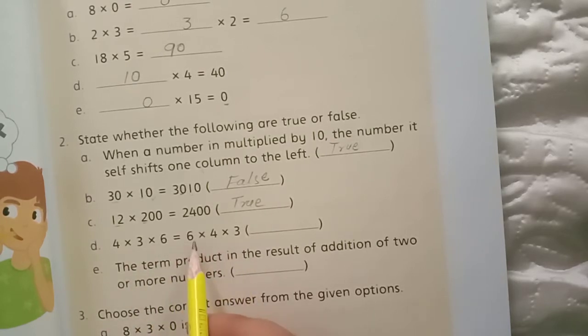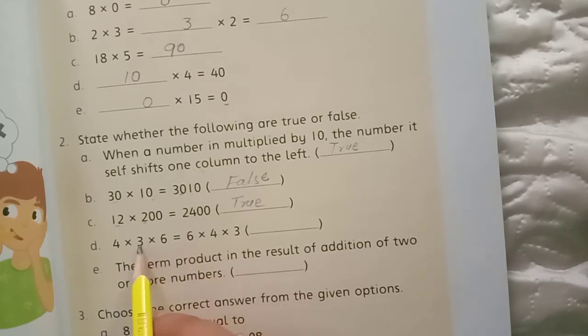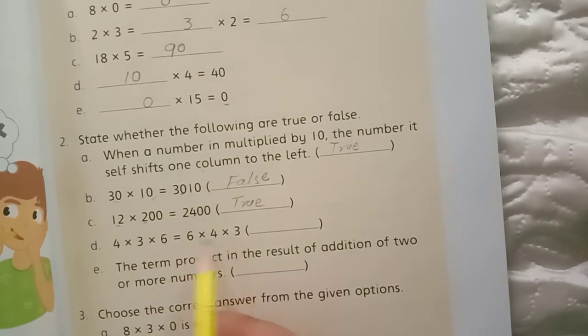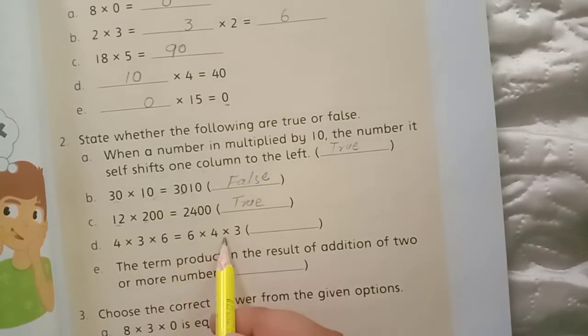When you multiply the numbers, 6 multiplied by 3 or 3 multiplied by 6 or 6 multiplied by 3, what is equal? True. If you multiply them, then the answer will be the same.